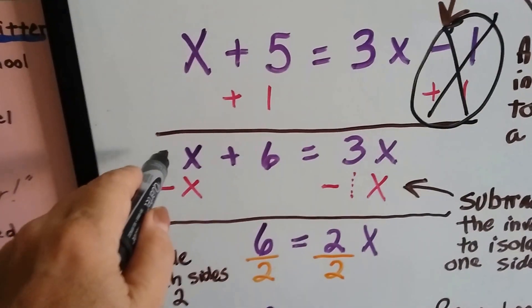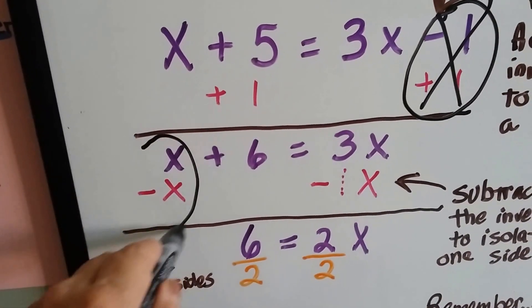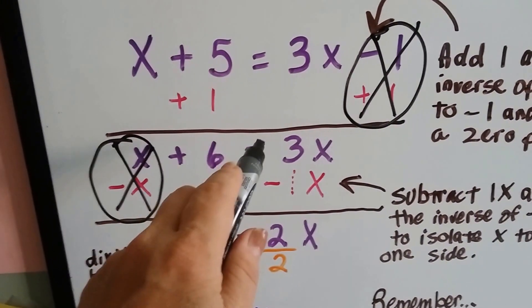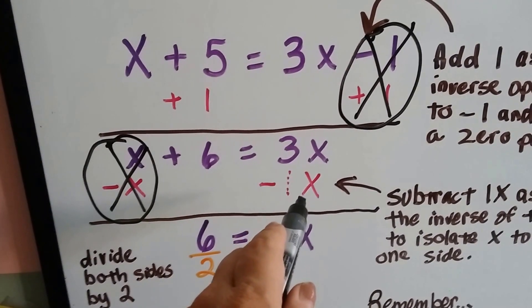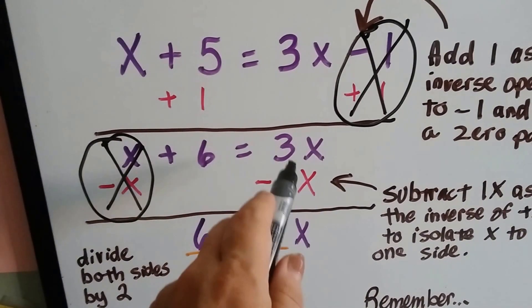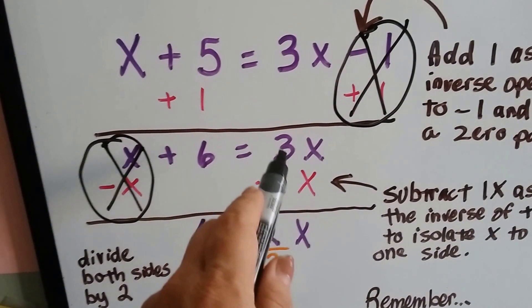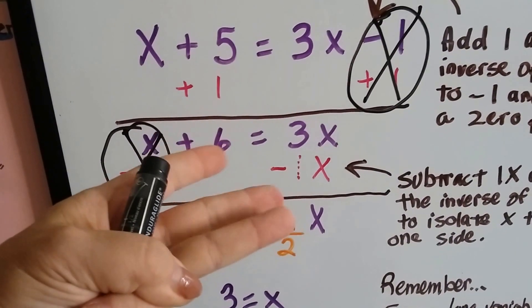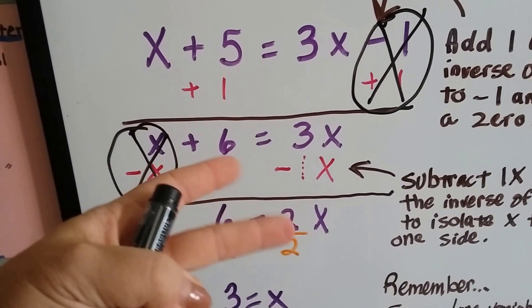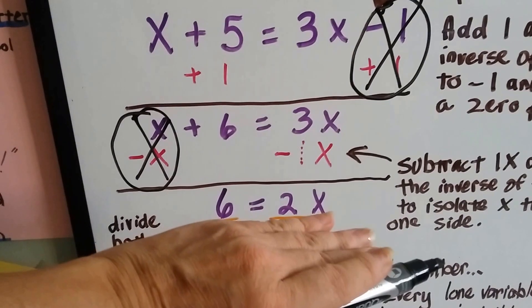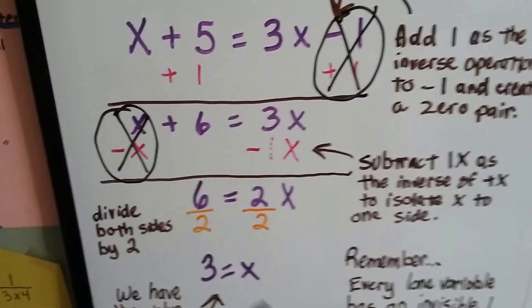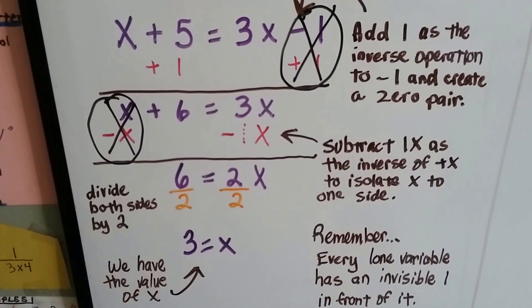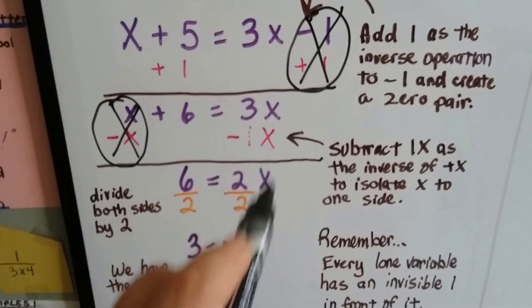So positive x minus x creates another zero pair, and these cancel each other out. Now we have 6 equals, and remember we're going to take an x away from this side, so there's really a 1x there. Do you remember that from last year? 3x take away an x leaves 2x's. If I have 3x's and I take 1 away, there's 2x's left. So now our equation says 6 equals 2x. We subtracted 1x as the inverse of plus x over here, and it isolated the x's to one side.